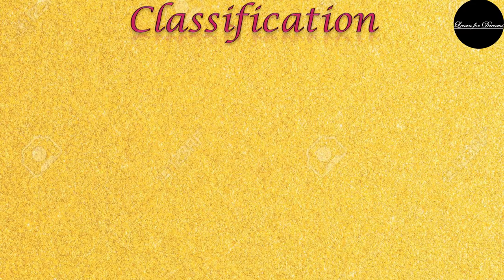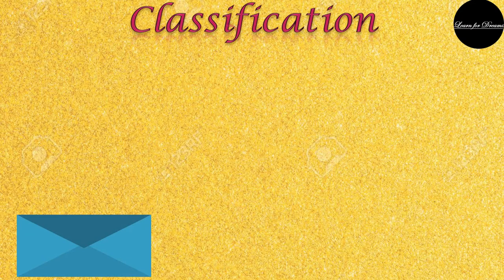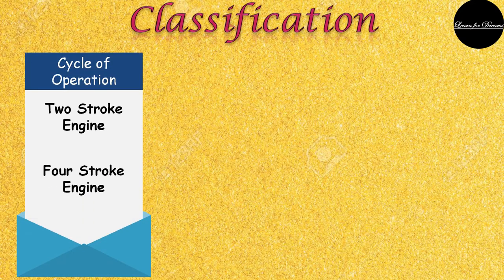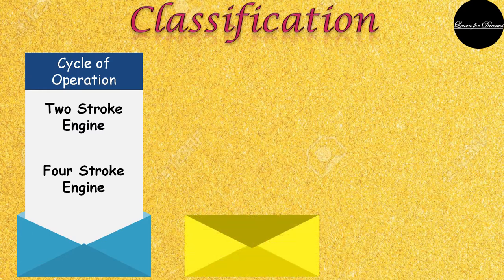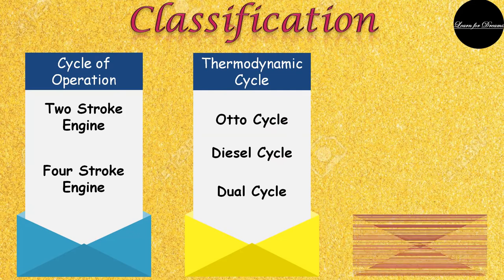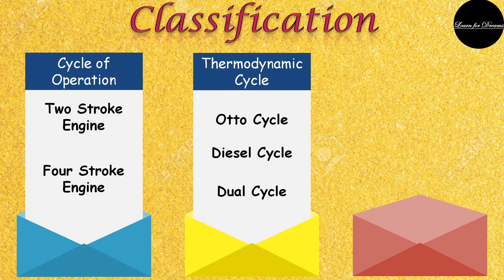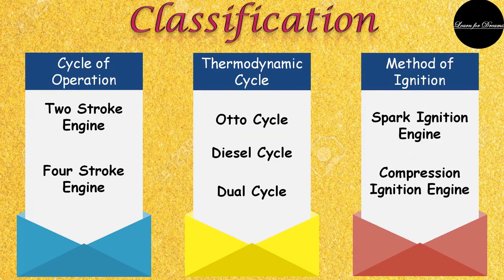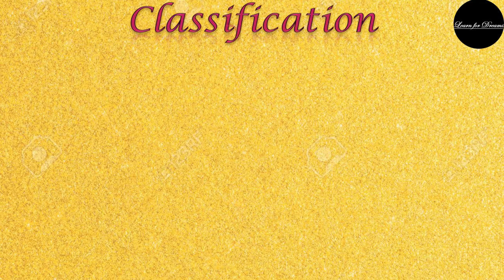Next we are going to see the classification of engine. The first broad classification is according to the cycle of operation — that is two-stroke engine and four-stroke engine. Next is according to thermodynamic cycle — whether it is Otto cycle, diesel cycle, or dual cycle. Next one is method of ignition — that is spark ignition engine or the compression ignition engine.